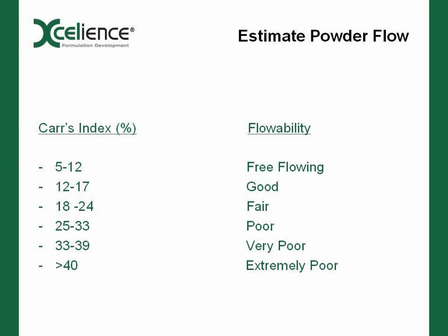We can use the Carr Index to estimate how our powder is going to flow. These are by no means hard and fast rules — a material with a Carr Index of 25 versus 24 is not definitively poor versus fair flowing. These are rough guidelines: if your material is going to have a Carr Index above 18, flowability may ultimately become a problem. If you have a Carr Index of less than 17, flowability is probably not going to be too much of a concern.